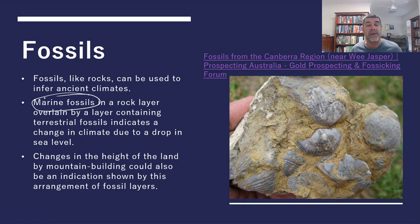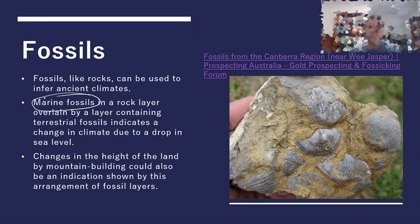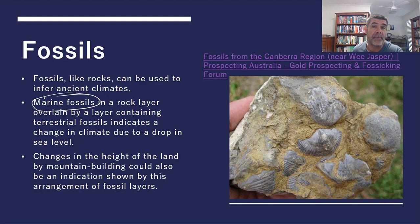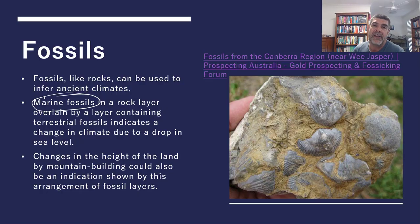Marine fossils in a particular layer overlaid by a layer containing terrestrial fossils could tell us something about changes in climate associated with changes in sea level. Of course, mountain building can also take areas that were formed in a shallow sea, ocean, or swamp environment, and due to uplift, raise them well above the level of the sea we find today. For example, fossils in the Himalayan mountains are suggestive that those areas were at much lower altitudes at the time of rock and fossil formation than they are today.